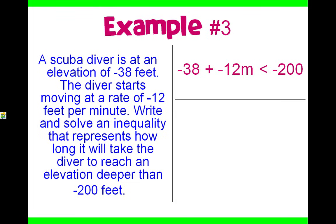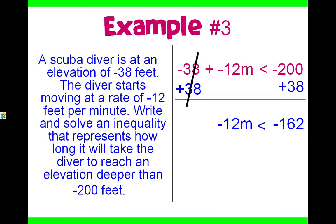Now we're going to solve to figure out how many minutes it would take for the scuba diver to reach deeper than negative 200 feet. Looking at our problem, we need to get rid of that minus 38. To do that, we add 38 to both sides. Opposites will cancel out, leaving us with negative 12m is less than negative 162. We did not have to flip our sign yet, but to get rid of that negative 12, we have to divide by negative 12. What you do to one side, you do to the other. Those opposites will cancel out, leaving us with m. Because we did divide by a negative, we flipped the sign. And negative 162 divided by negative 12 is 13.5.